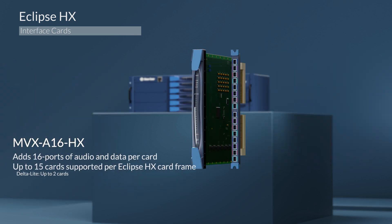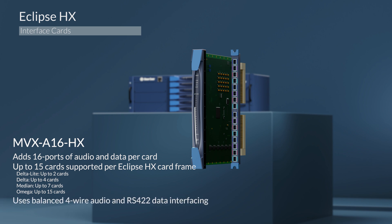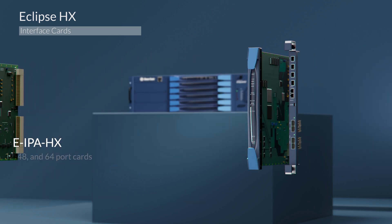Now for integrations requiring additional ports, we have the MVX A16. This card adds 16 ports of audio and data per card. Up to 15 cards of support per Eclipse HX card frame — with Delta Lite up to 2, Delta up to 4, Medium up to 7, Omega up to 15 cards. Using balanced 4-wire audio and RS-422 data interfacing, this card enables up to 16 additional analog audio interface ports. The MVX A16 interface card communicates with ClearCom panels or other analog audio equipment over balanced line-level analog audio connection, and includes RS-422 serial for control. Each analog connection to the card enables distribution of that audio to any other device within the Eclipse system.